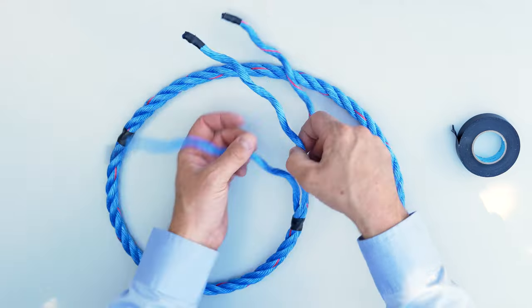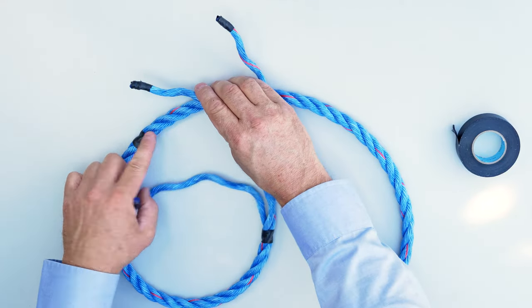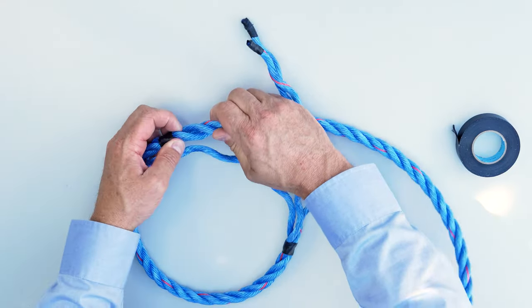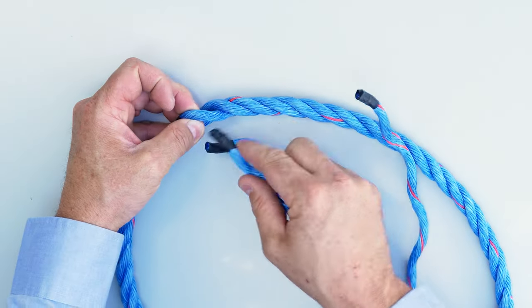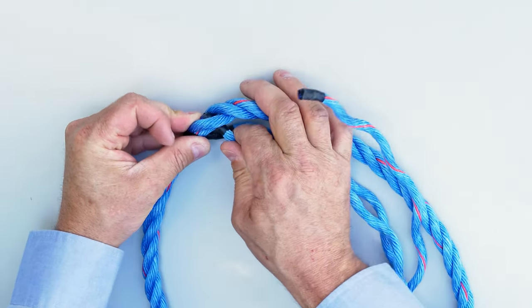Take the center strand and pass it underneath the first pick past the piece of tape there. Open the rope up, pass that center strand underneath there and pull it tight.